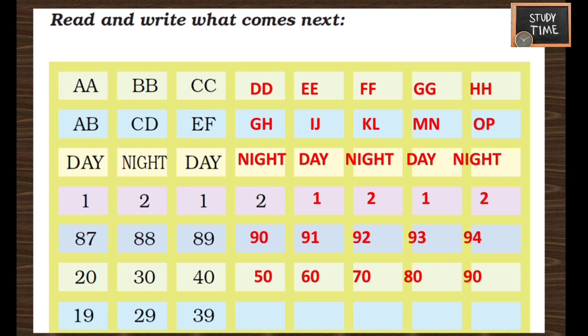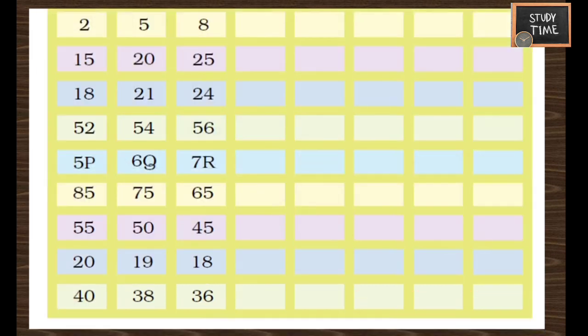Next: 19, 29, 39 — you have to add 10 more, so you will get 49, 59, 69, 79, 89. Next: 2, 5, 8 is given — between 2 and 5 they left 3 and 4. Similarly you can continue the pattern. After 8, leave 9 and 10, so the pattern will be 11; leaving 12 and 13, write 14. The pattern goes: 11, 14, 17, 20, 23. Next: 15, 20, 25 — just add 5 each time: 30, 35, 40, 45, 50.